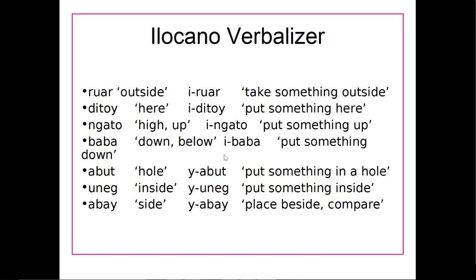So we have 'e' and 'y' as two different forms of that same verbalizer. Try to think about what sounds are occurring in the environment of the verbalizer, and see if you can come up with a reason we might have one form in one place and another form in another place. What do these four words — 'ruar,' 'ditoy,' 'ngato,' and 'baba' — have in common? You can pause the video if you need to. Well, they all start with a consonant.